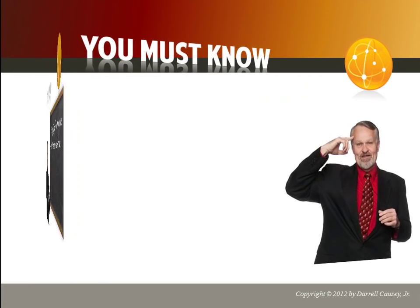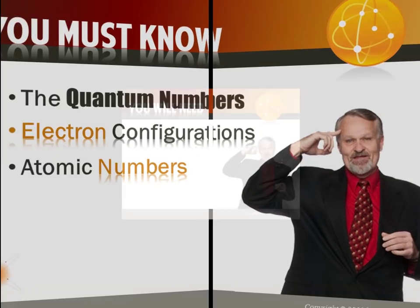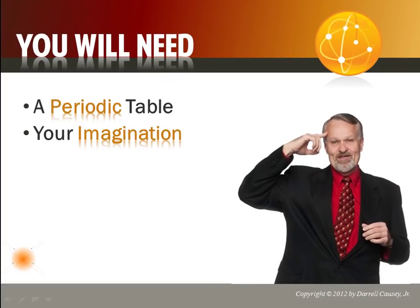So you will need to know the quantum numbers, the electron configurations, atomic numbers, and you're going to need a periodic table and your imagination. Now, if you have the periodic table memorized, great. If not, get a periodic table in front of you. You don't need anything fancy, just a good, simple periodic table. And then you need to use your imagination.